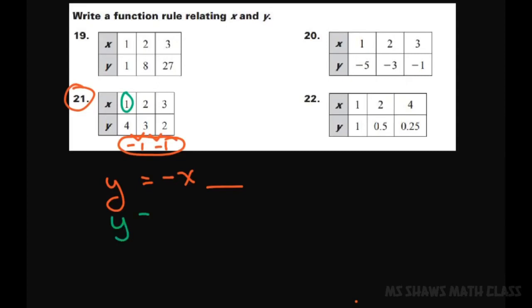So we have Y equals negative, or X is 1. So that's just going to be negative 1. So at negative 1, what do you have to do to get to 4? You have to add 5 because negative 1 plus 5 is 4. So I'm going to try plus 5 as my formula on the other two.